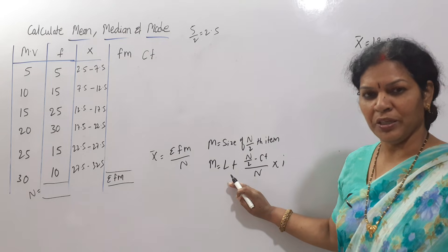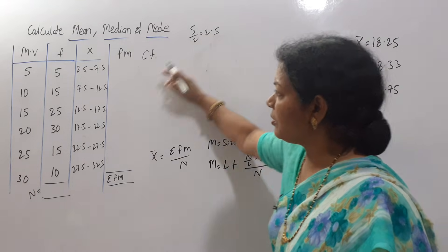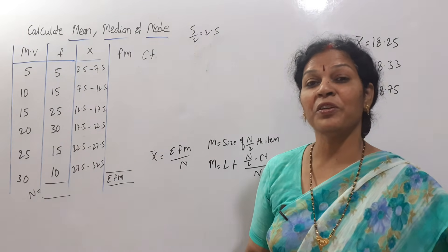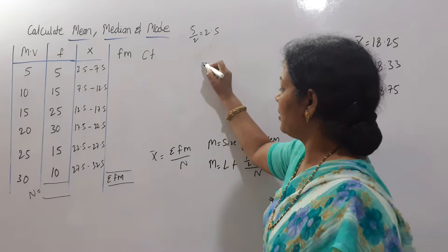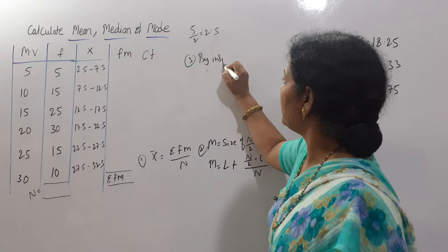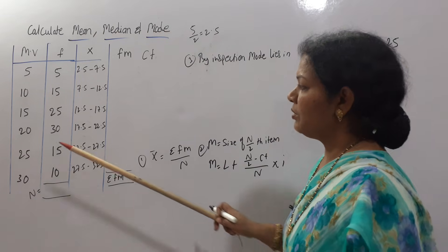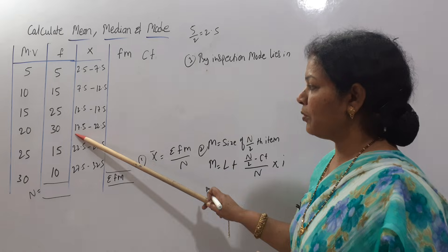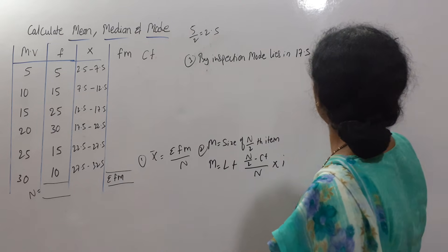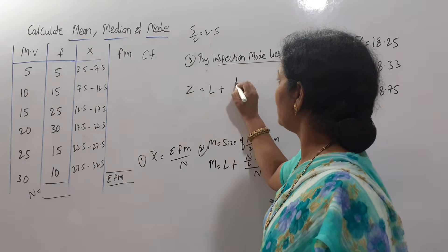Next after that mode. For mode if you see the frequency, highest frequency is 30, next highest is 25, there is a difference. So that is why by inspection mode lies in so and so class interval. You can write one sentence. Coming to mode, you can write by inspection mode lies in which class interval. Here 30 is the highest frequency, so mode lies in 17.5 to 22.5. We have written one sentence.